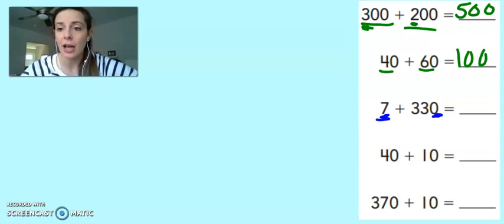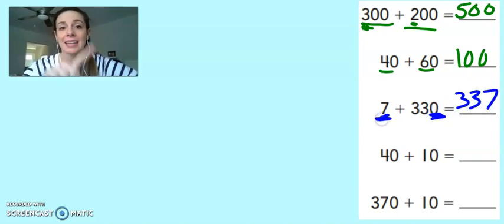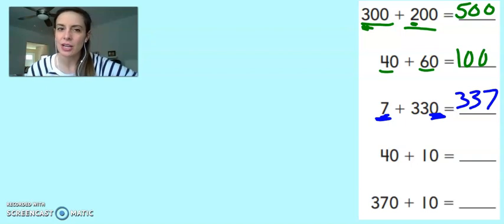So to add these two up, I can keep my 3 hundreds, keep my 3 tens, but instead of 0 ones, I can replace it and put 7 ones. It's almost like I'm adding straight up and down, but I don't have to write it on my paper or on my board.